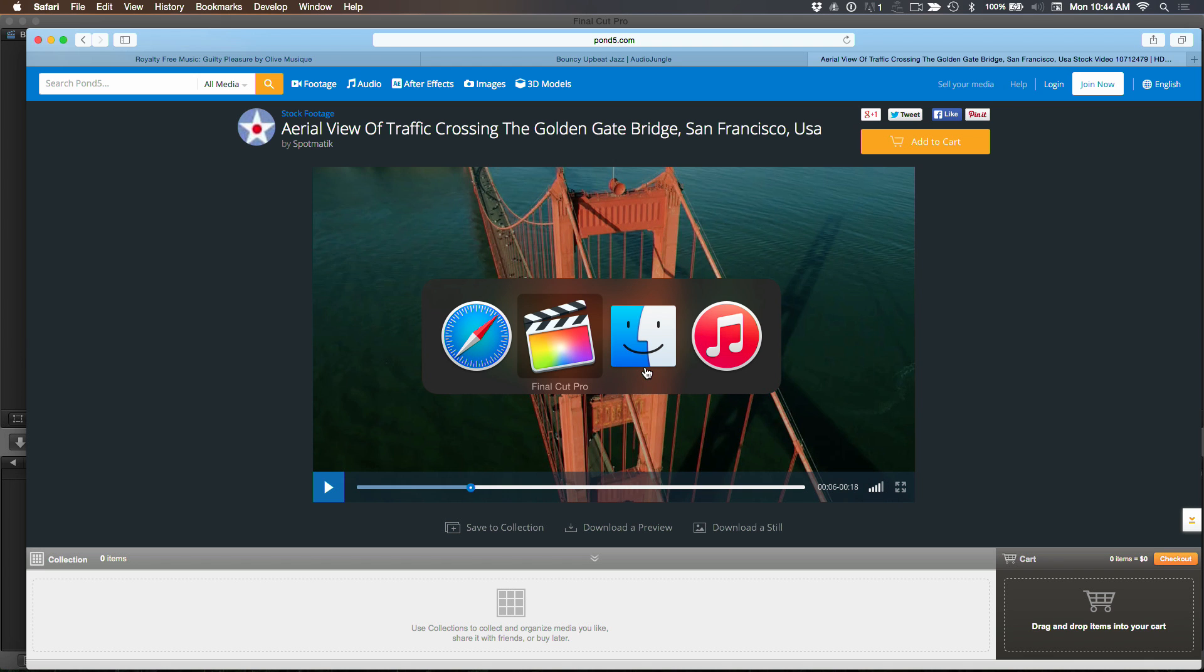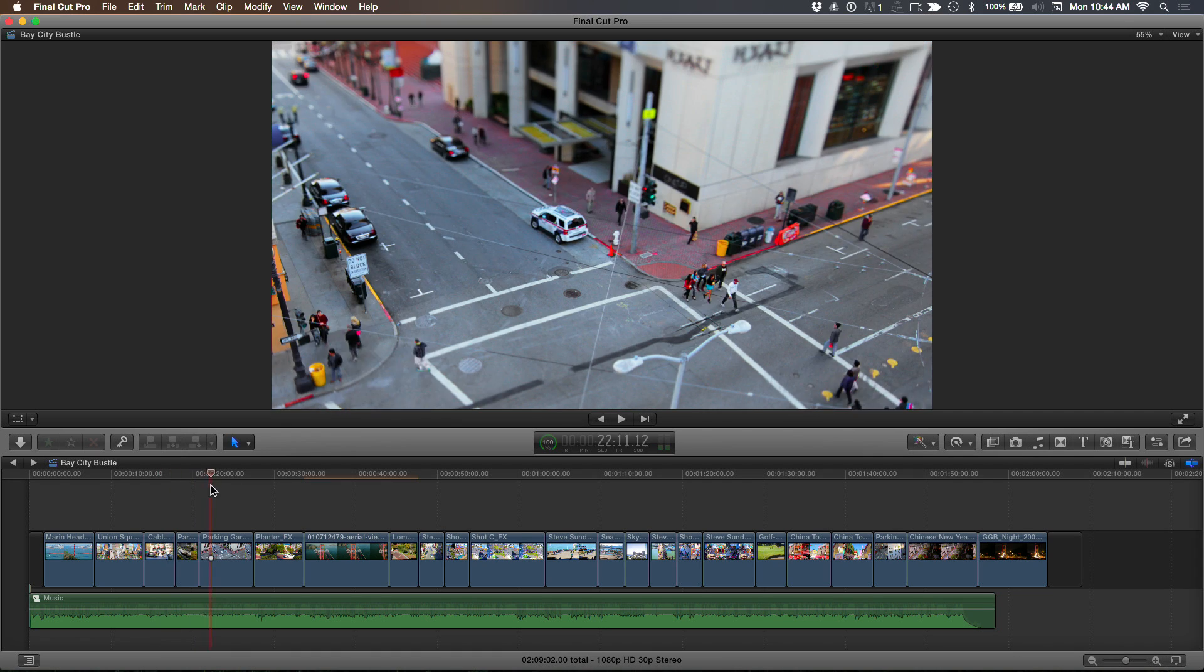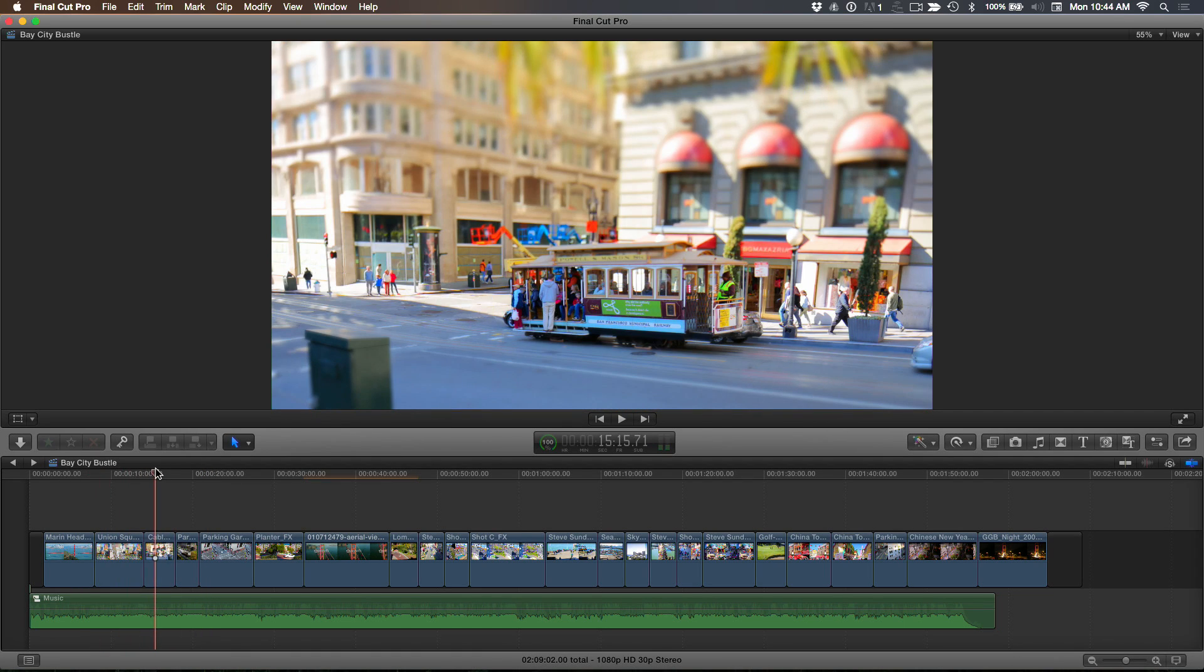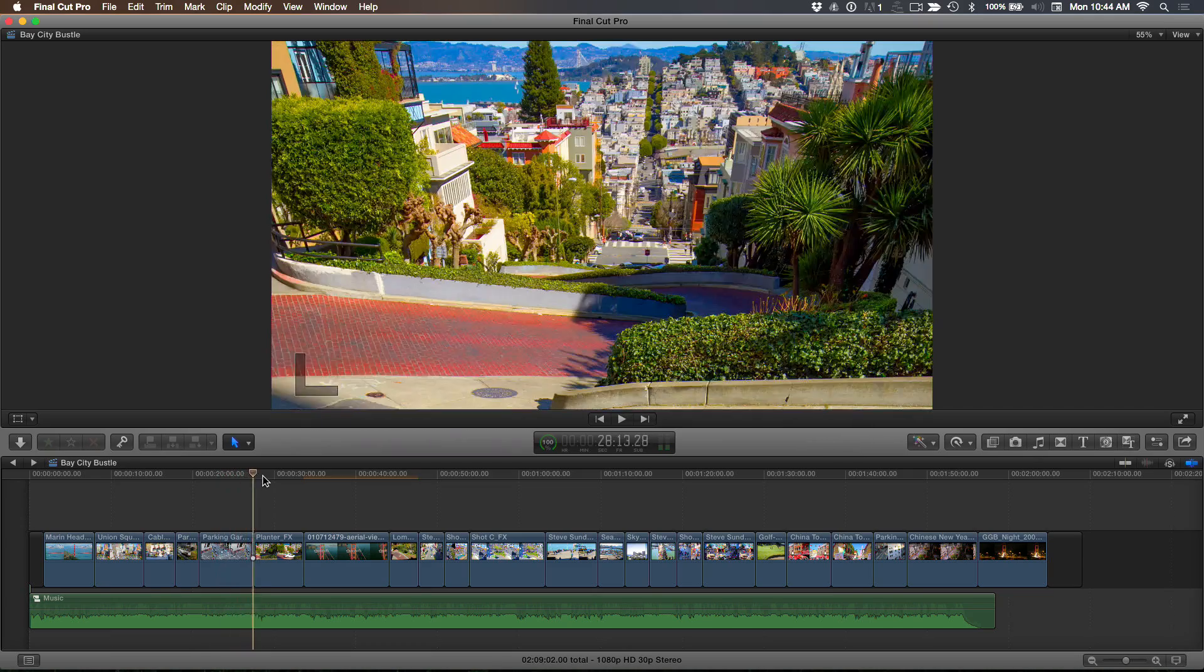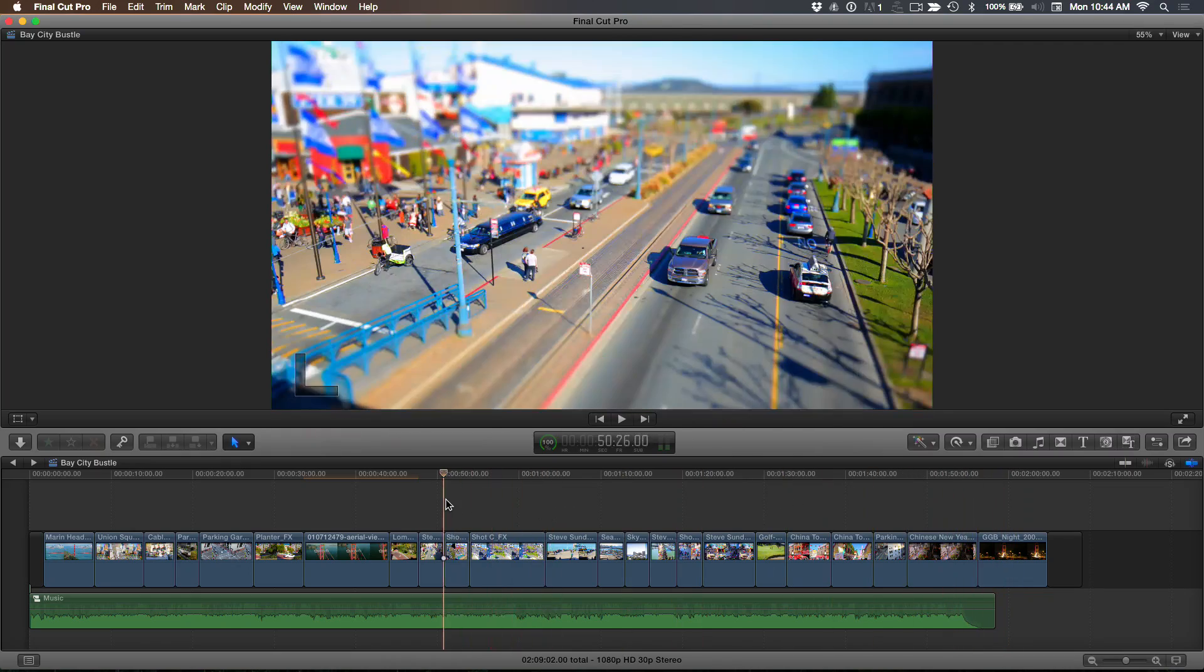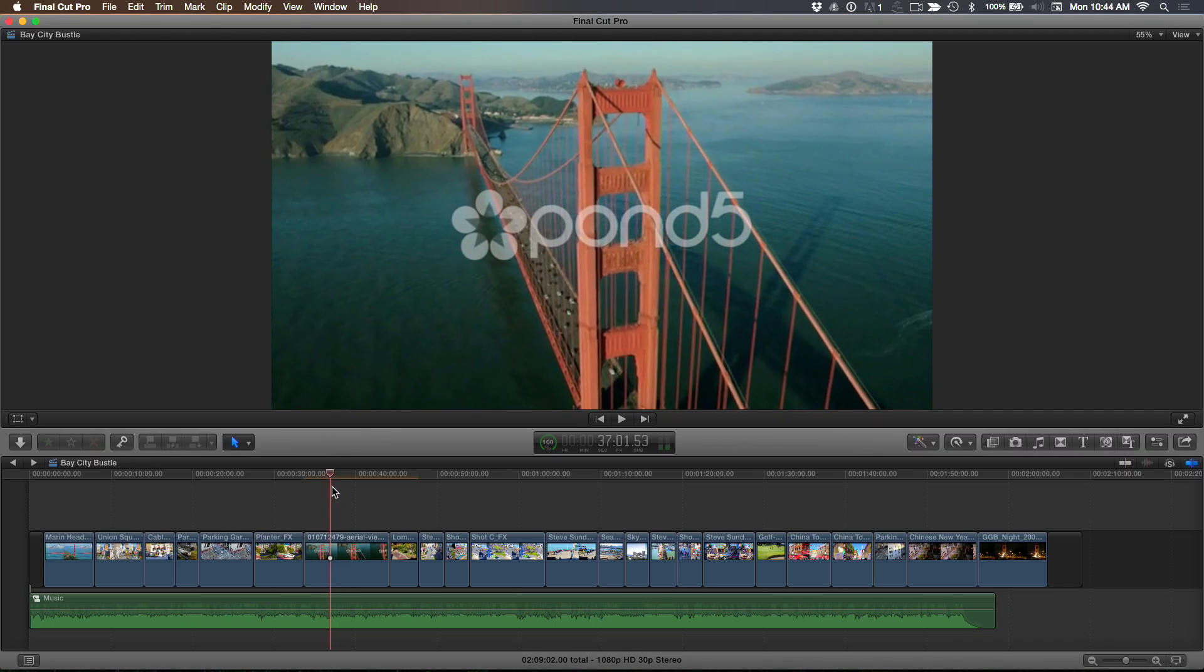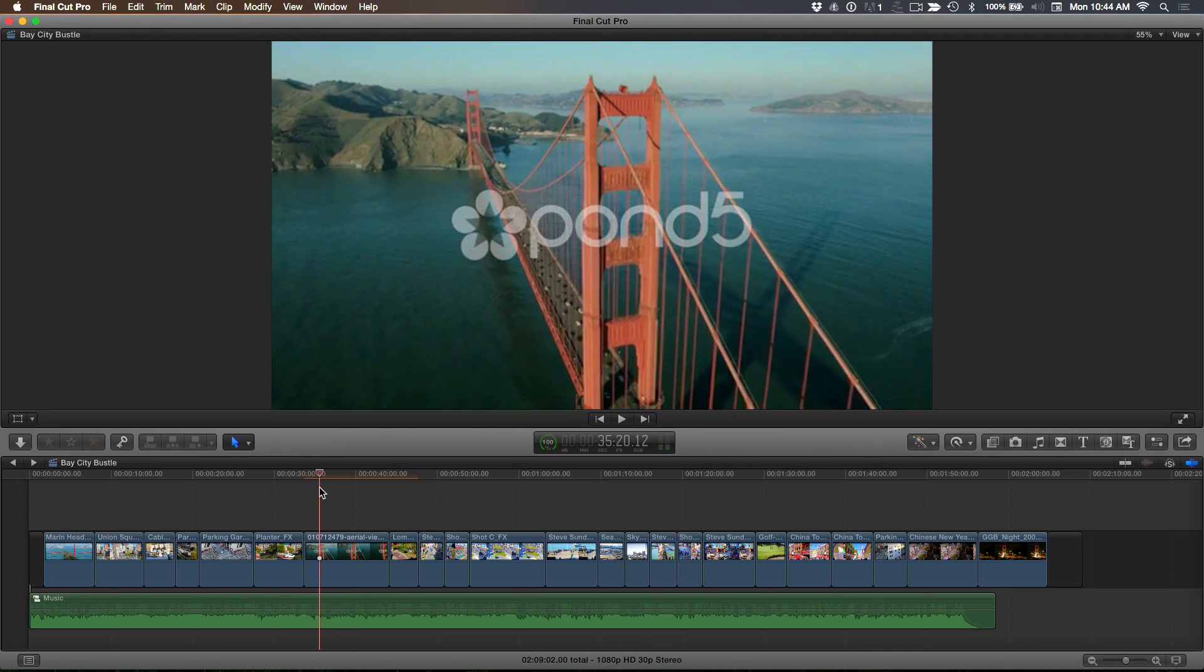So I'm going to go back to Final Cut and show you that I've got this time-lapse project. And let's say I was working on this for a client. I'm my own client because I did this. But let's say this is something for network or broadcast or what have you. And I have a lot of stuff from San Francisco here. I've got these Golden Gate Bridge shots. But I needed another Golden Gate Bridge shot.